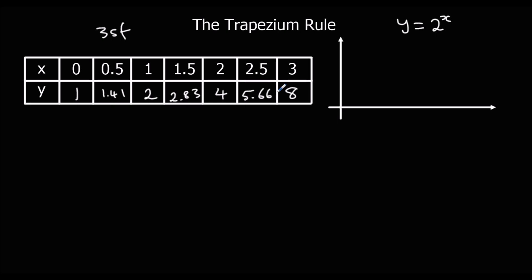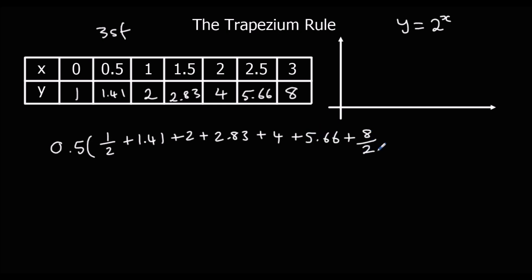The width of each trapezium is 0.5, so we take 0.5 outside the bracket, half the first value, add all the ones in the middle, and half the last one. Typing that into the calculator gives 10.2 units squared — though if you used more accurate numbers you may have got a slightly more precise answer.